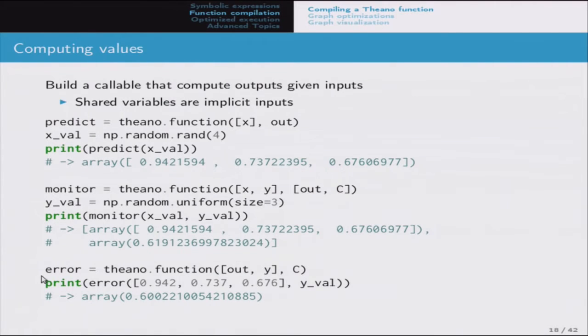You provide values for all input variables you defined, but not for shared variables - W and B are implicit inputs to all functions and their values are automatically fetched when needed. You can declare a monitoring function that computes both the output and the cost, requiring two outputs and the second input Y. You can also define an error function that doesn't start from the raw input but instead takes the prediction and computes cost directly.